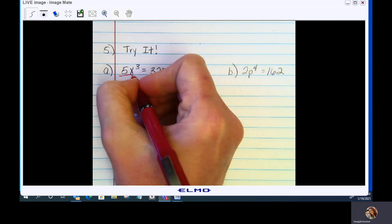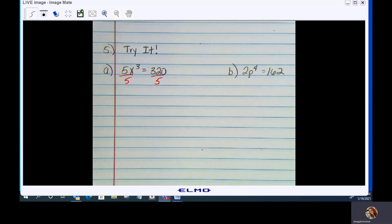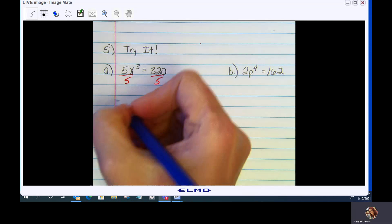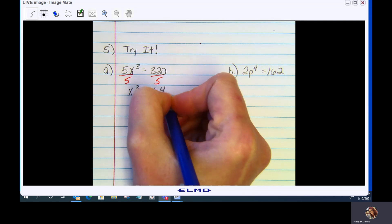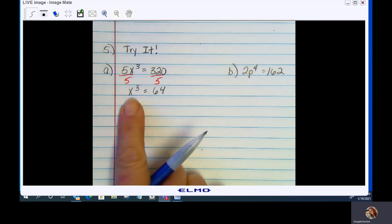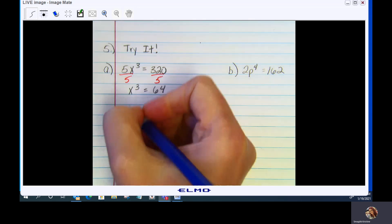I'm going to divide out the 5 from both sides. That gets me x cubed equals 64. And again, I'm still trying to get x by itself. So what I'm going to do is take the cube root of both sides.